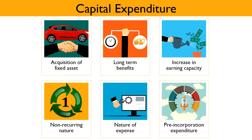Next is Long-Term Benefits. The benefits derived from such an expenditure must be of an enduring nature — in short, benefits must be spread over a number of accounting years. Hence it is considered as an asset, and so it is debited to the fixed asset account and shown in the balance sheet.